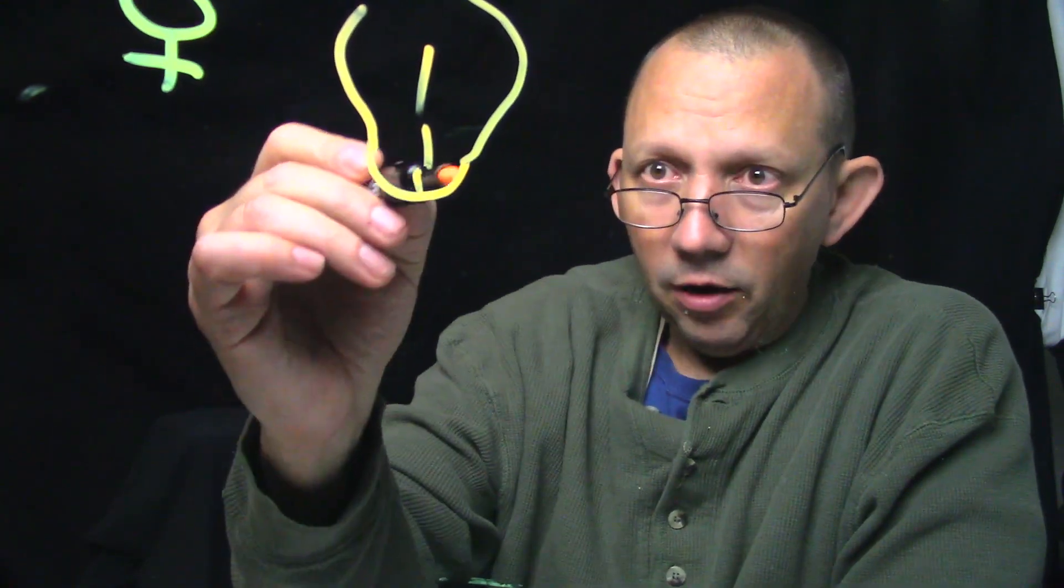The vaginal canal is similar to the corpus spongiosum and corpus cavernosum—the same kind of material, but there's a little bit of differences. Basically, it's the same system just inside out. The vaginal canal is collapsed, and it'll open.